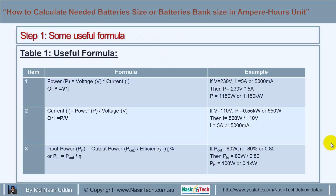The second formula is: Current equals Power divided by Voltage. If your voltage rating is 110 volts and power rating is 550 watts, your current will be 5 amps (550 watts divided by 110). The third formula is: Input power for any device equals Output power divided by Efficiency. For example, if a device output power is 80 watts and efficiency is 80 percent, then input power will be 80 watts divided by 0.8, which gives 100 watts.